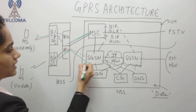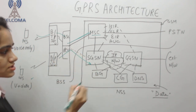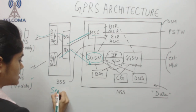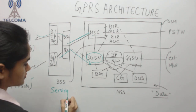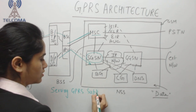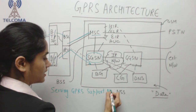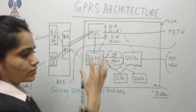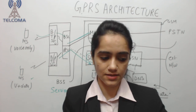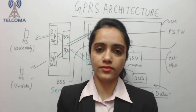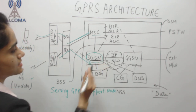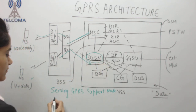For a voice plus data phone that wants data, the path goes to the SGSN. SGSN stands for Serving GPRS Support Node. It handles all packet switching — where to route the packet and where it is coming from. All switching functionalities are performed by the SGSN.